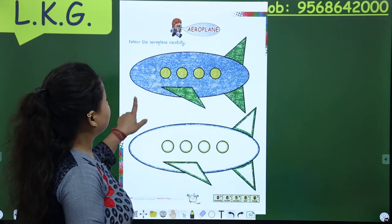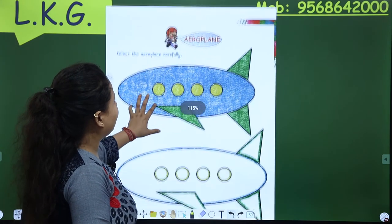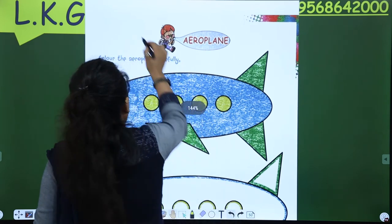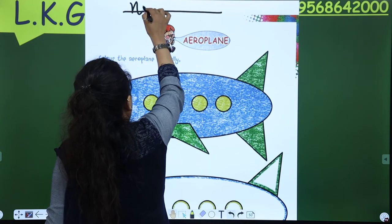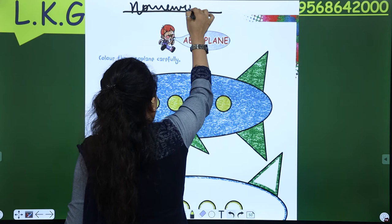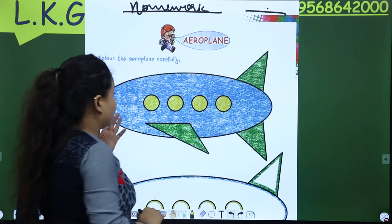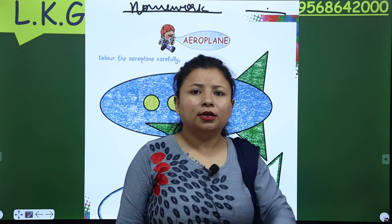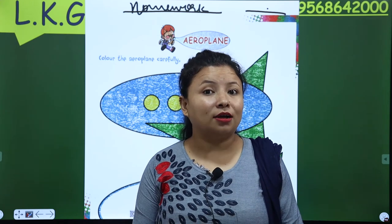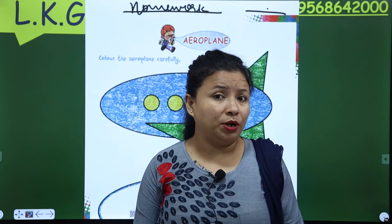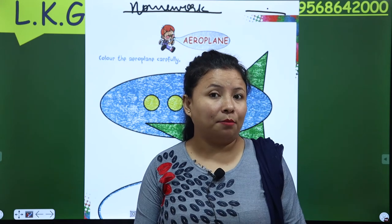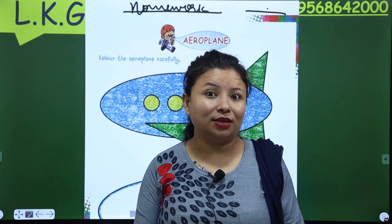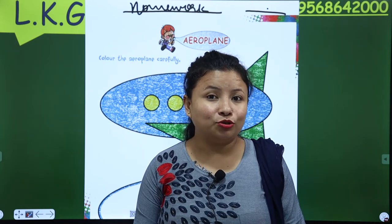Next is aeroplane. This is aeroplane. Now mention the homework here and the date. This is aeroplane and it flies in the sky. It flies in the sky. And who wants to fly the aeroplane? Who wants to be a pilot?